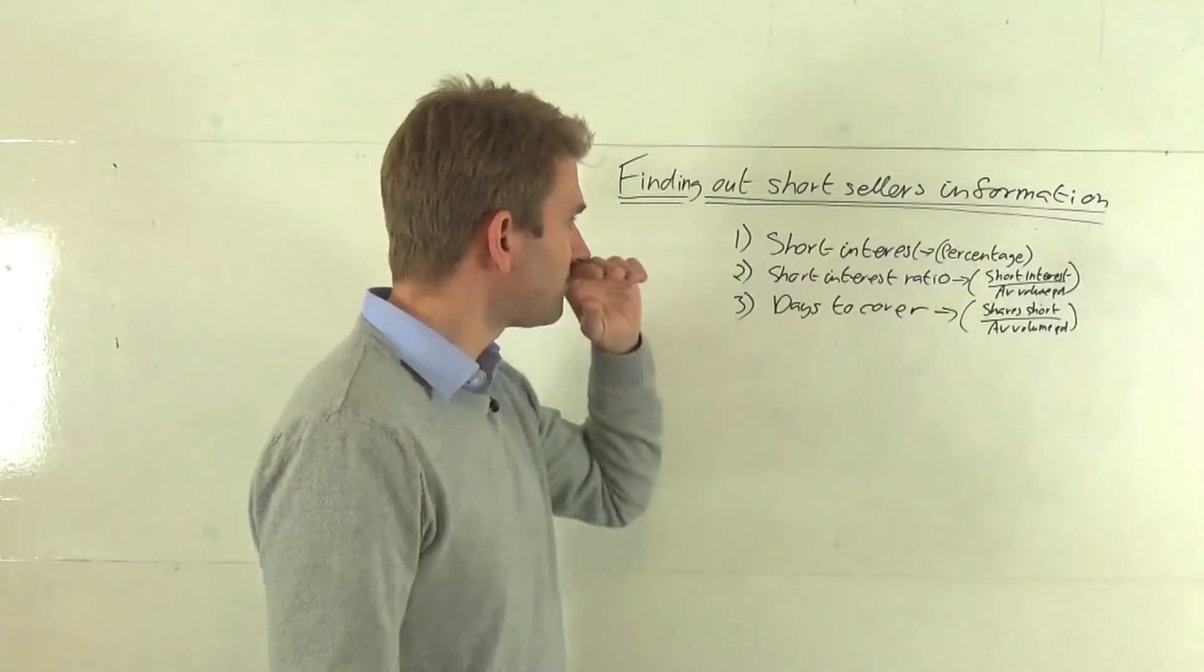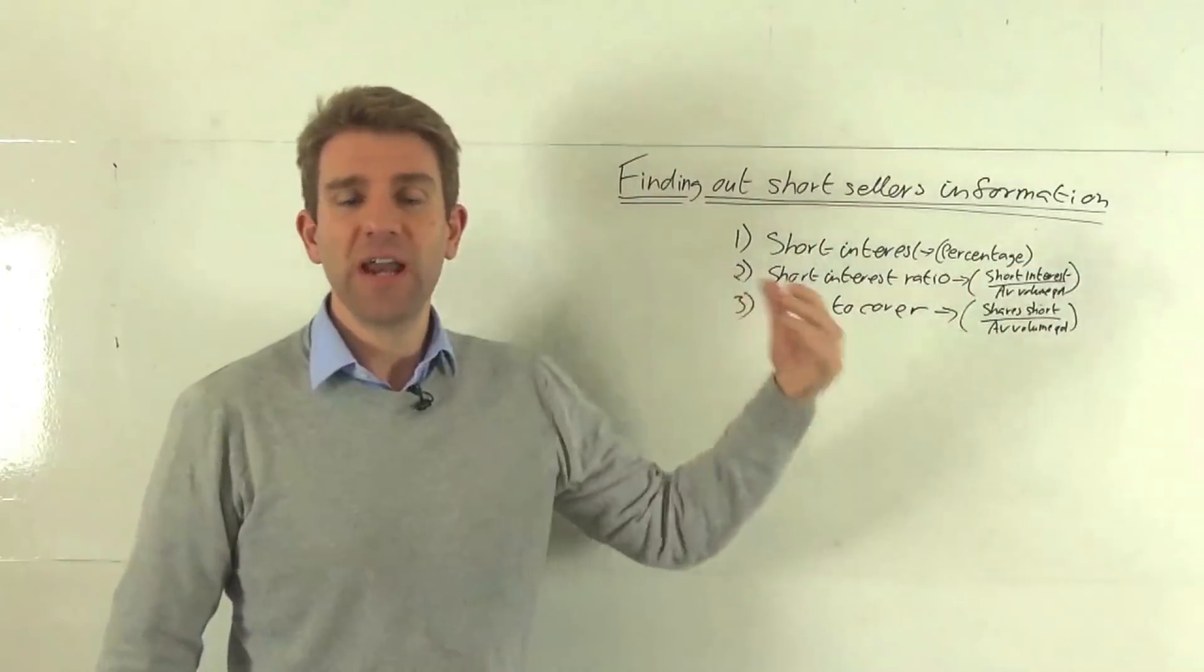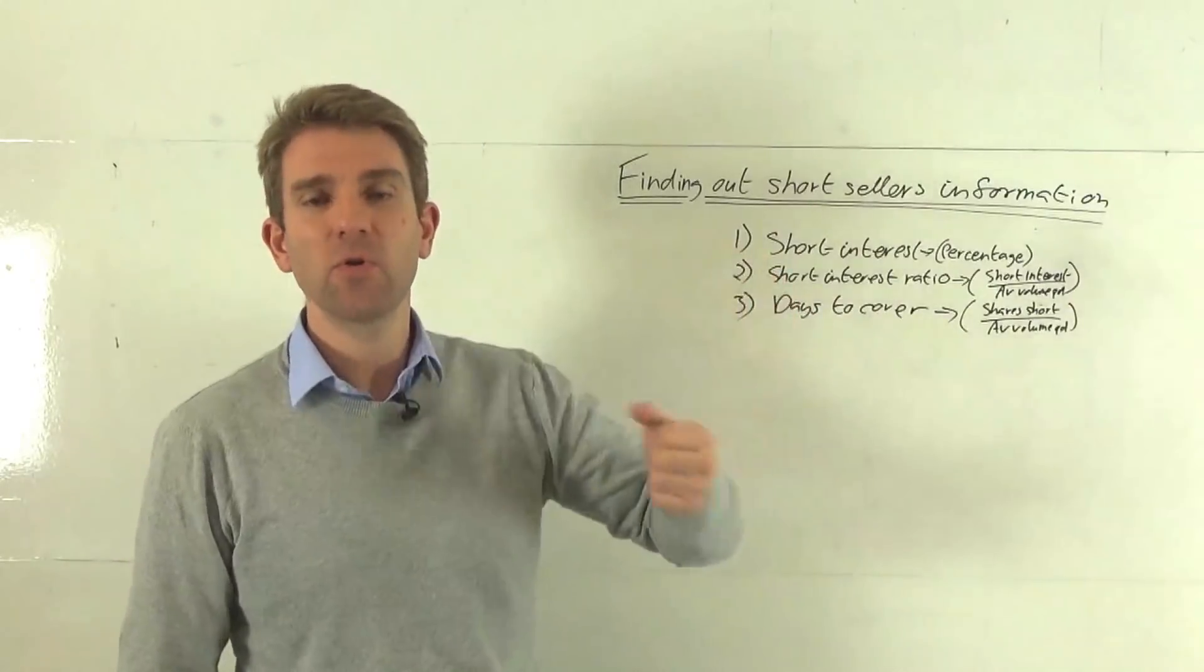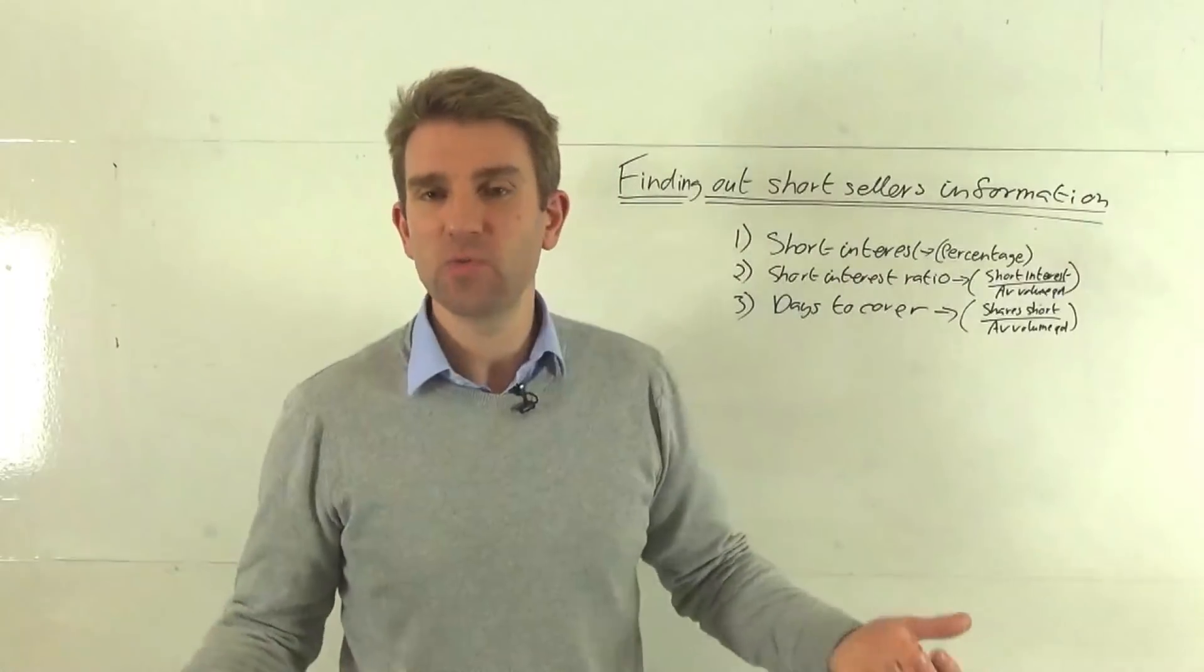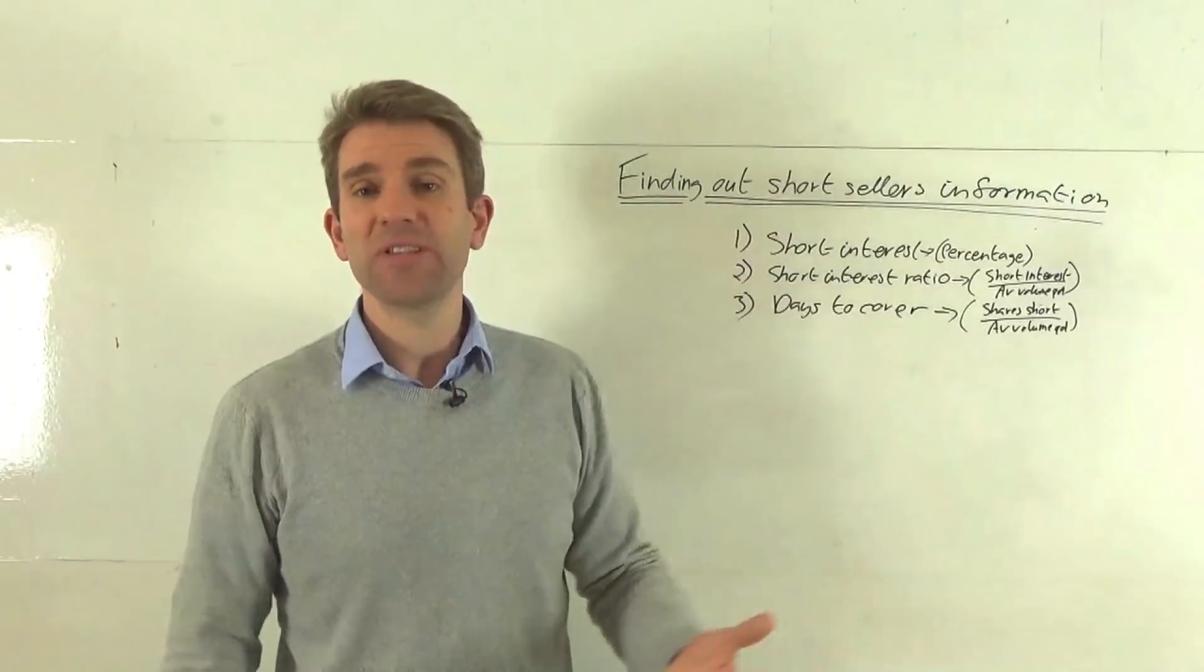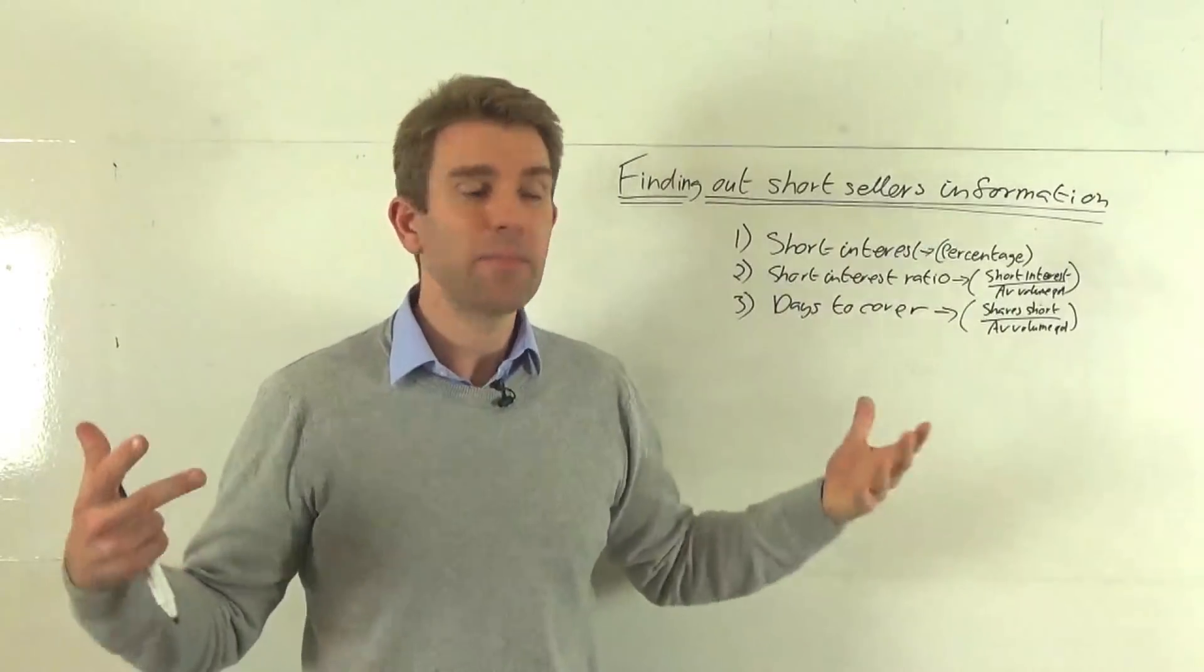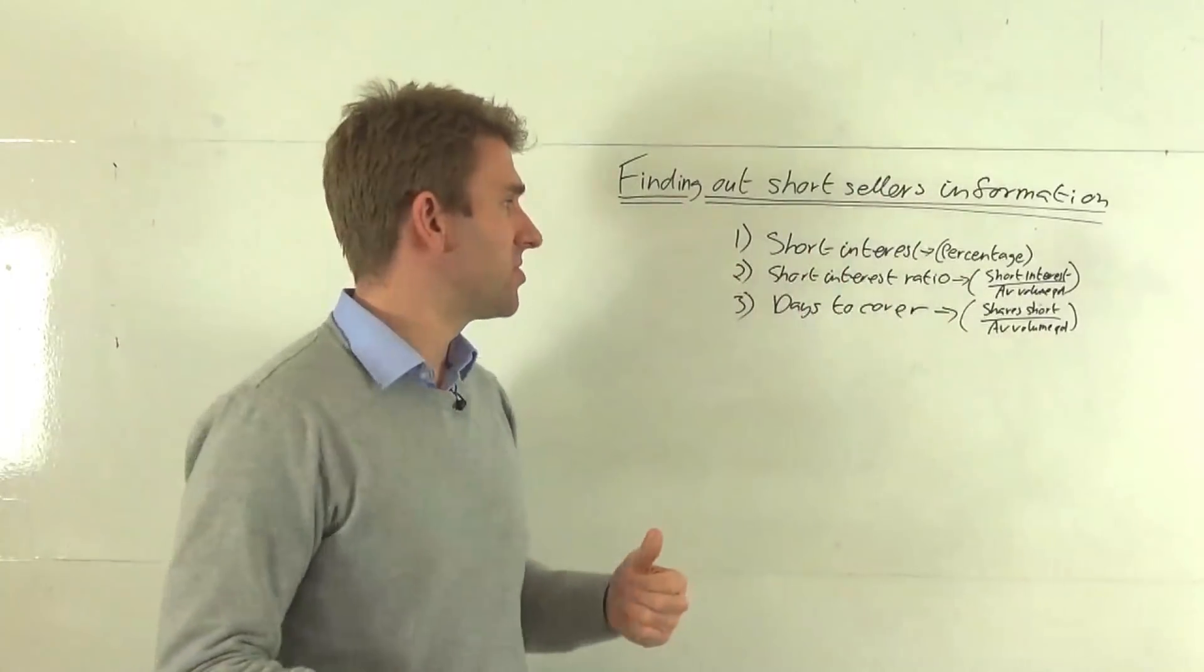First thing is the short interest. This is normally classed as a percentage and it's a percentage of the total number of shares short divided by the total number of shares outstanding. For example, we've got a million shares outstanding, we've got a hundred thousand shares short, we're looking at ten percent would be the percentage of short interest.